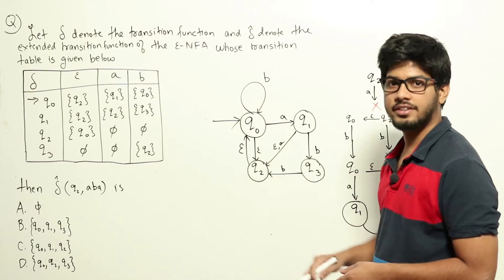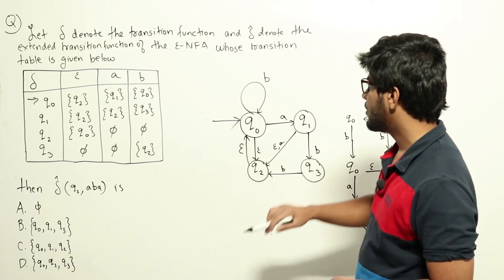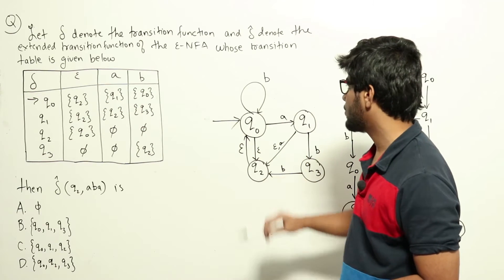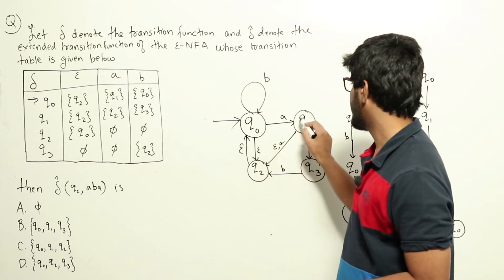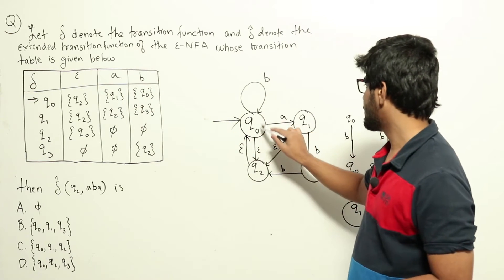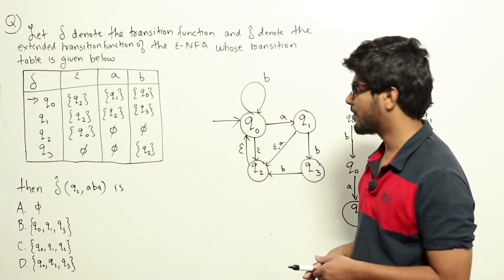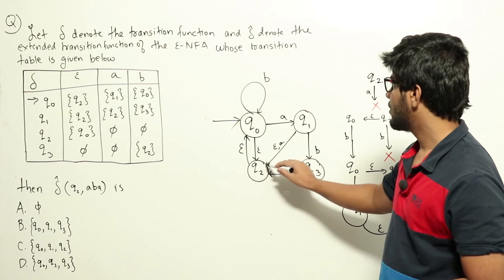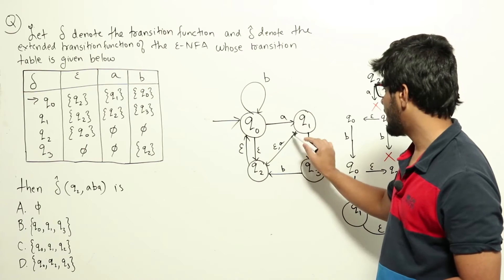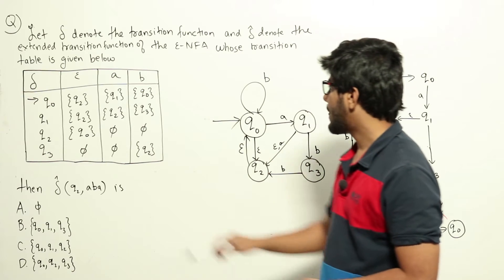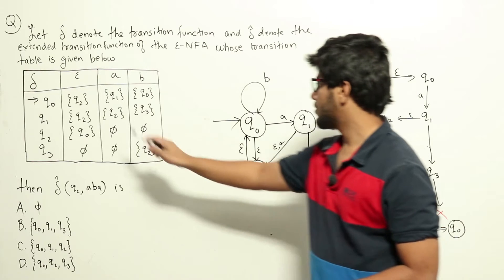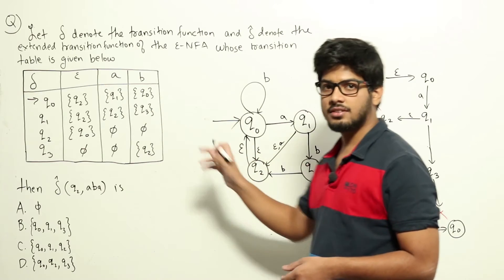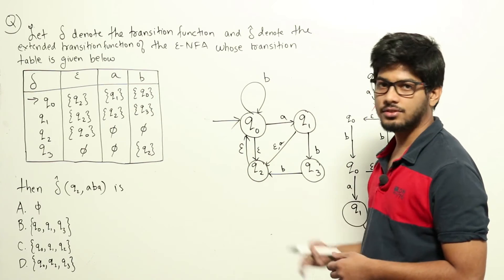This is the NFA given by the transition table. From state q0: on epsilon we go to q2, on a we go to q1, on b we go to q0. From q1: on epsilon we go to q2, on a we go to q2, on b we go to q3. From q2: on epsilon we go to q0; on a and b there is no transition, which is fine for an NFA.